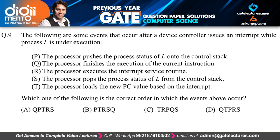This next question is about interrupt processing. After a device controller issues an interrupt while process L is executing, the following events occur: (1) the processor pushes the process status of L onto the control stack; (2) the processor finishes execution of the current instruction; (3) the processor executes the interrupt service routine; (4) the processor pops the process state of L from the control stack; (5) the processor loads the new program counter value based on the interrupt. What is the correct order?